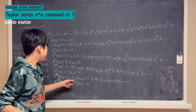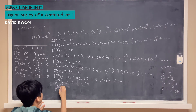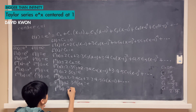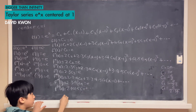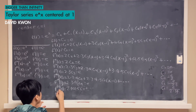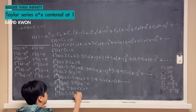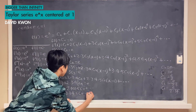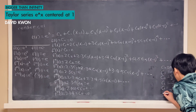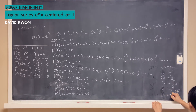Now we differentiate one final time. So we have f to the fifth of x, which is equal to 2 times 3 times 4 times 5 times c sub 5, plus dot dot dot. Setting x equal to 1, f to the fifth of 1 equals 2 times 3 times 4 times 5 times c sub 5. And since f to the fifth of 1 equals e, c sub 5 is equal to e over 2 times 3 times 4 times 5.